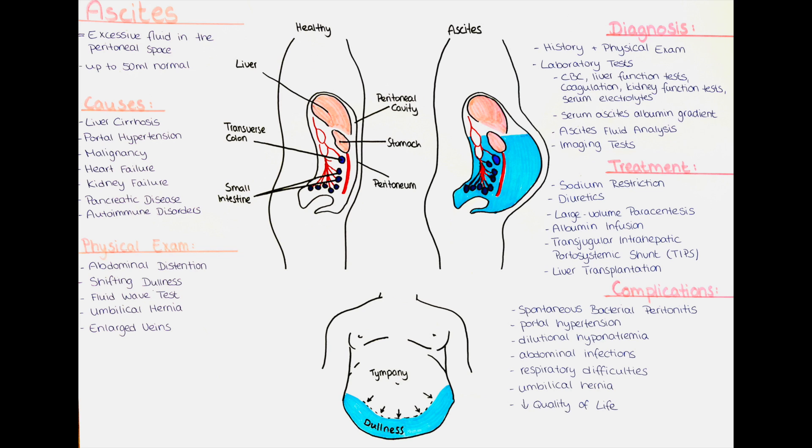Then we evaluate the ascites fluid for cell count, differential, total protein, albumin, glucose, lactate dehydrogenase, and microbiological culture. The ascites fluid analysis helps to determine the cause of ascites, such as infection, malignancy, or other inflammatory conditions.